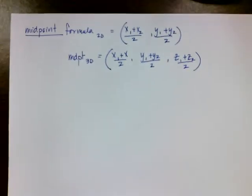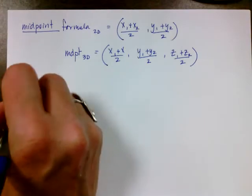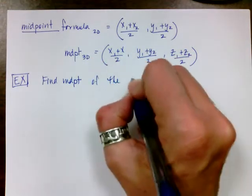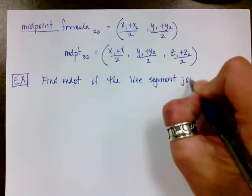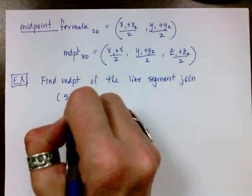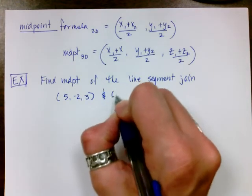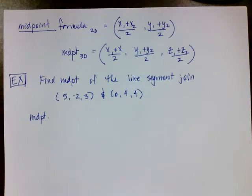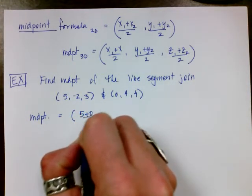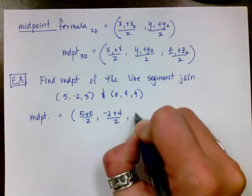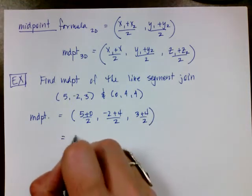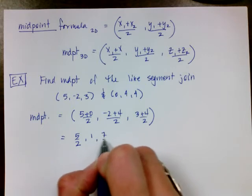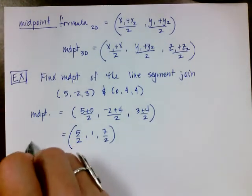Let's find the midpoint of the line segment joining the points (5, −2, 3) and (0, 4, 4). Adding these together: (5 + 0)/2, (−2 + 4)/2, and (3 + 4)/2. So my midpoint is 5/2, then 2/2 is 1, and then 7/2. I would leave it like that — I wouldn't bother putting it in decimal form because fractions really are your friends.